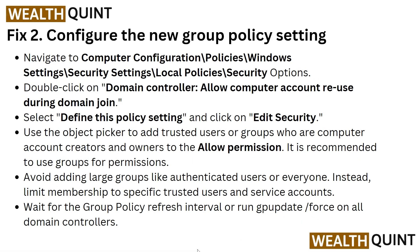For solution two, configure a new Group Policy setting. Navigate to Computer Configuration > Policies > Windows Settings > Security Settings > Local Policy > Security Options. Double-click on Domain Controller: Allow computer account reuse during domain join. Select Define the policy setting, then click Edit Security and use the Object Picker to add trusted users or groups who are computer account creators and owners with Allow permission. It is recommended to use groups for permissions and avoid adding large groups like Authenticated Users or Everyone — instead, limit membership to specific trusted users and service accounts.